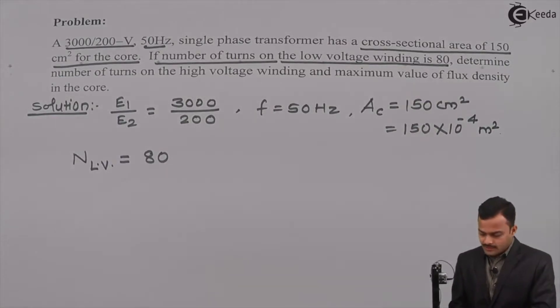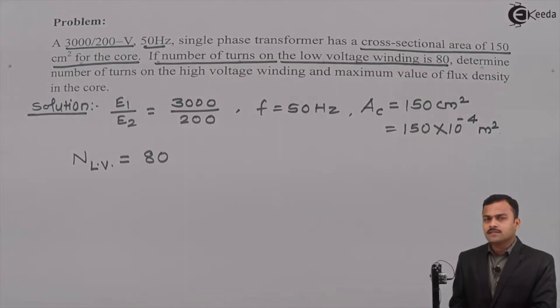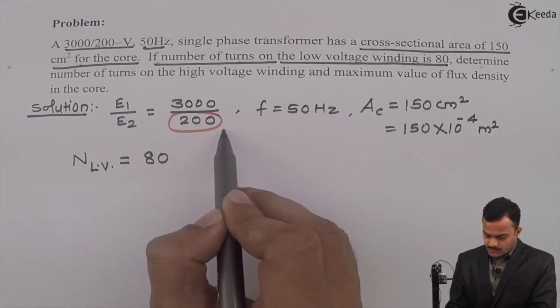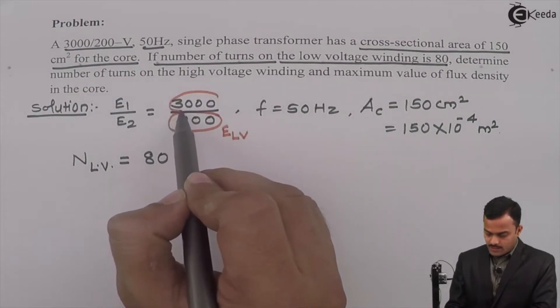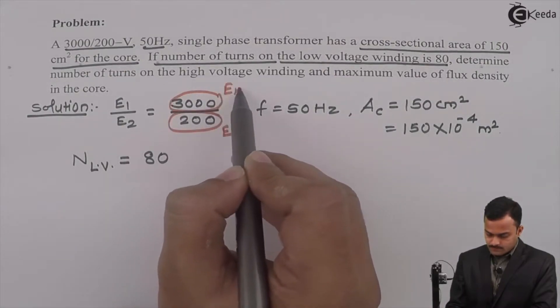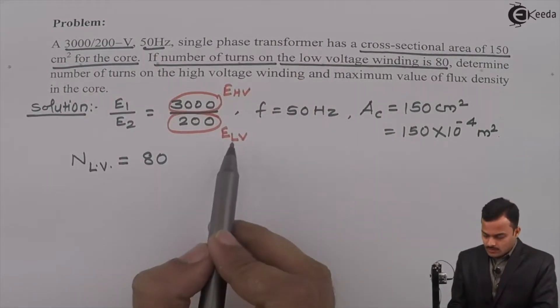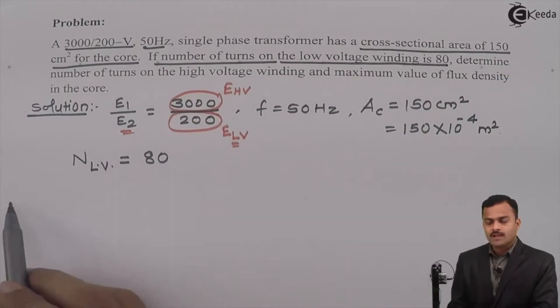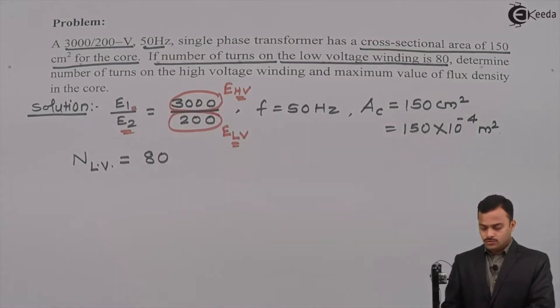If we see carefully out of these two, which one will be low voltage side? Obviously E2, so this is nothing but low voltage winding and this will be high voltage winding. If you talk in terms of primary and secondary, low voltage winding will be secondary and high voltage will be primary.